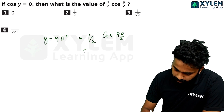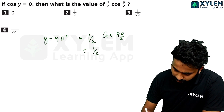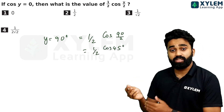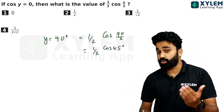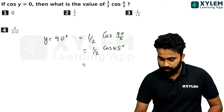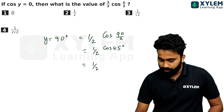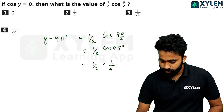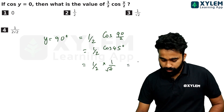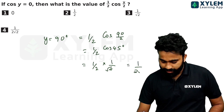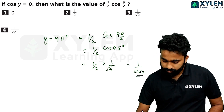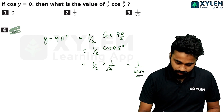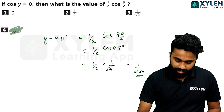Cos 90 by 2 means half times cos 45. We know that cos 45 is 1 by root 2 in the triangle. So half into 1 by root 2, that is 1 by 2 root 2 is the right answer. This is the right option.